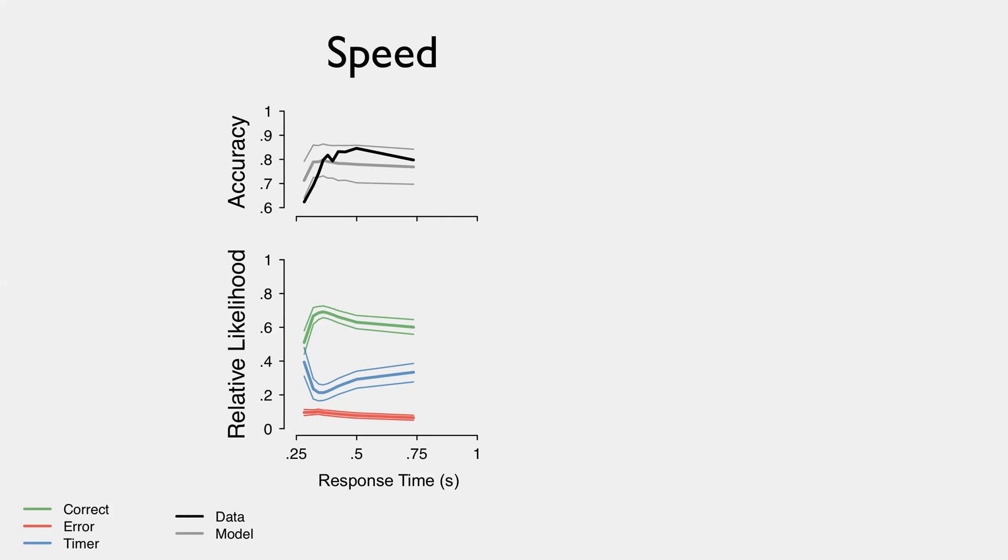So this shows us how the model is able to account for fast errors, the timing accumulators hitting threshold early, and also slower errors, the correct accumulator becomes less likely to hit threshold as time goes on, and the timer is more likely to hit threshold.